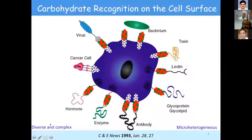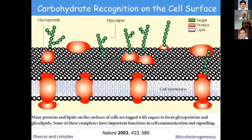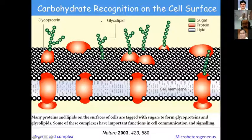Structurally, they are diverse and complex and present in micro-heterogeneous form in nature. That's where synthetic organic chemists like us come into the picture, so that we can make structurally well-defined and chemically pure compounds for biological activity and medicinal chemistry. This cartoon picture shows the positioning of carbohydrates on the cell surface, and as you can appreciate, they are well-placed to act at the interface of cells, making them important in cell signaling and communication.